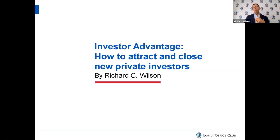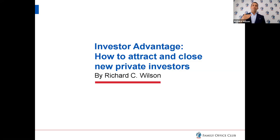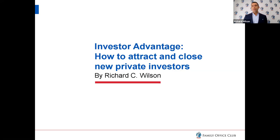Both trends — more family offices being created and more independent sponsors getting funded — are running in parallel. People worth $10 to $15 million want more control and transparency than somebody worth $1 to $2 million. Likewise, someone worth $30, $50, or $100 million has a longer sales cycle and wants an even higher level of control. By the end of this presentation, you should have fresh ideas to apply to your projects.